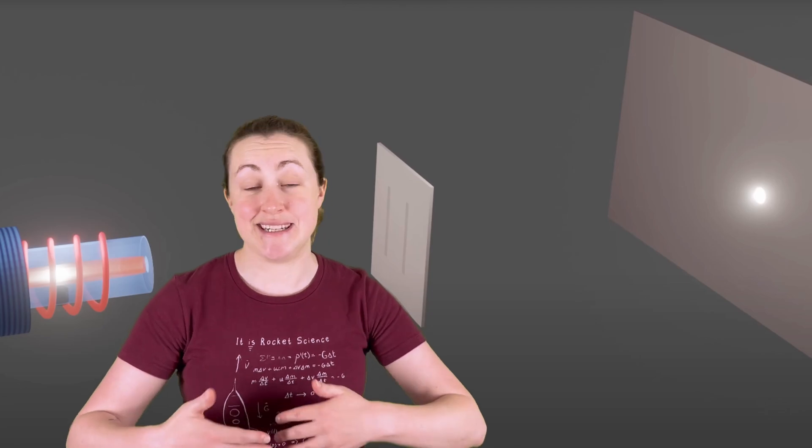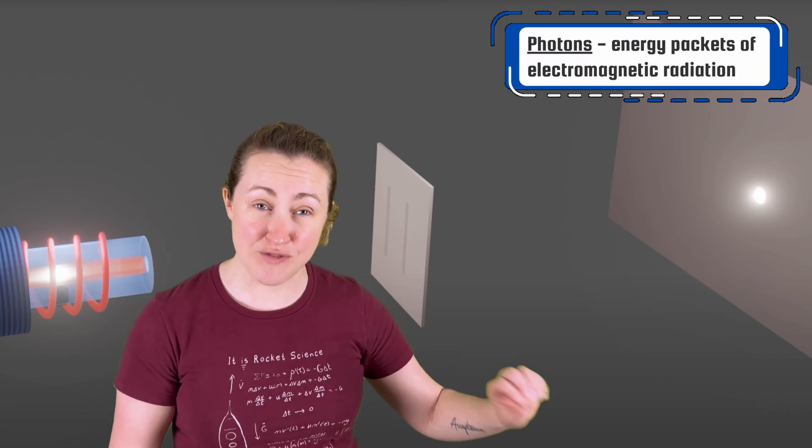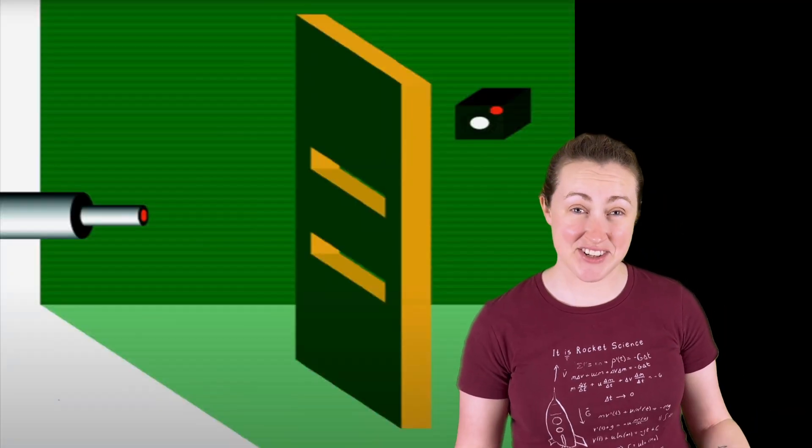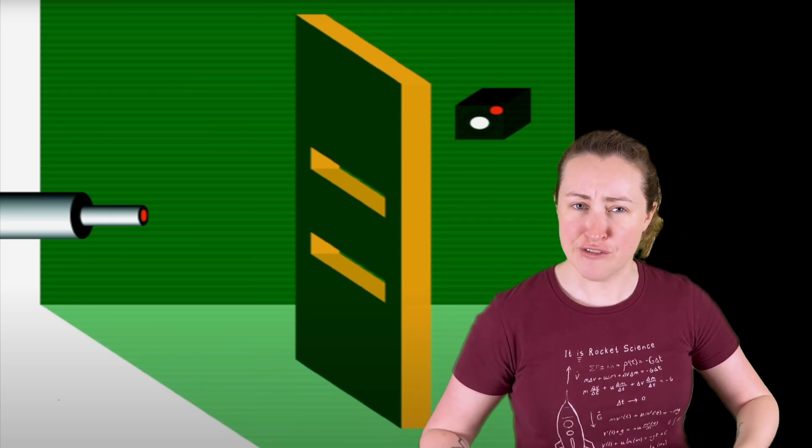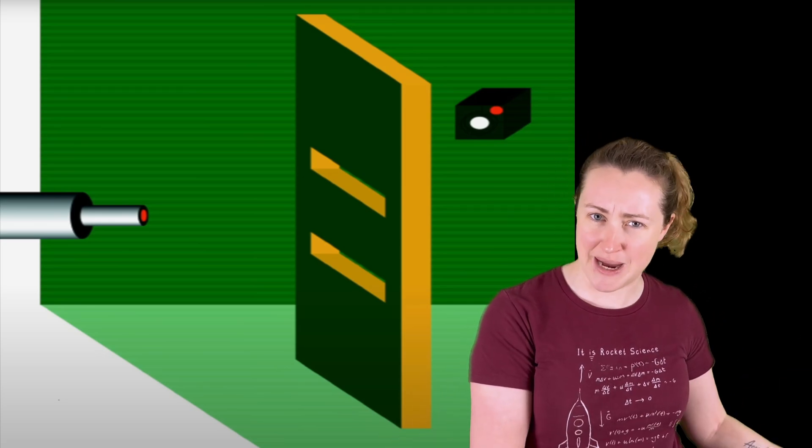So once we developed the technology to send individual photons through the slits, we shot one through and it landed straight on the other side like a particle. But if we keep shooting them over and over, they eventually form an interference pattern again, like a wave.